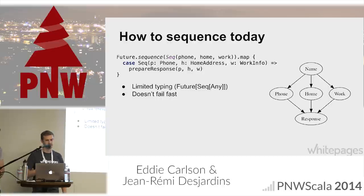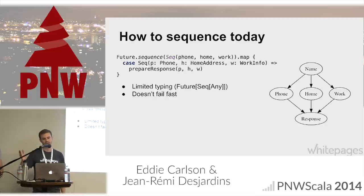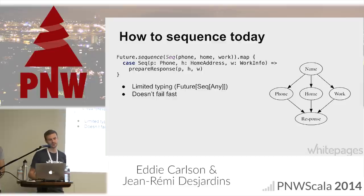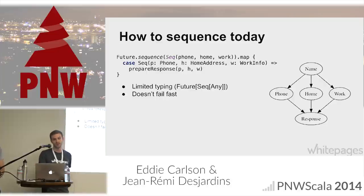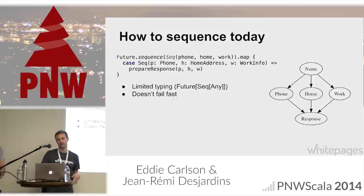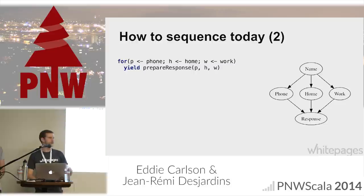Another reason this isn't so great is that it does not fail fast. Imagine that the home service is down and we send off requests for phone, home, and work. Phone takes two seconds to complete, but home has an exception right away. In our sequence, we'd have to wait two seconds for the result of Future.sequence to be that exception, even though home failed immediately. The desired behavior would be that this Future.sequence fails as soon as any of them fail. The ultimate goal is an interface where we provide multiple futures to a sequence function that fails fast and retains order and type information.